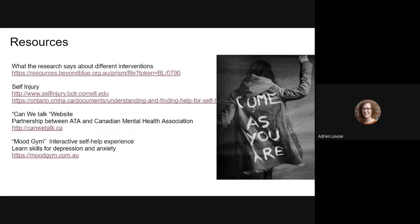Moving into some resources: the first article looks at what the research says about different interventions for depression — whether it's cognitive behavioral therapy, narrative therapy, exercise, yoga, or mindfulness — and gives a summary of how effective each is. There are two articles on self-injury: the first website provides resources about self-injury, and the second is the Canadian Mental Health Association, which addresses mental illness and self-injury, explaining it to an audience who doesn't understand why somebody might self-injure and how to support that person without isolating them further.